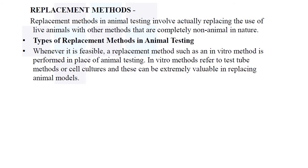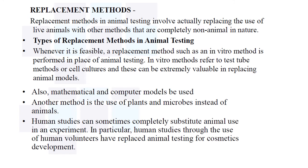The replacement method in animal testing involves actually replacing the use of live animals with completely non-animal methods. Whenever feasible, an in vitro method is performed in place of animal testing. In vitro methods refer to test tube methods or cell cultures, which can be extremely valuable in replacing animal models. Mathematical and computer models can also be used, as well as plants and microorganisms instead of animals.